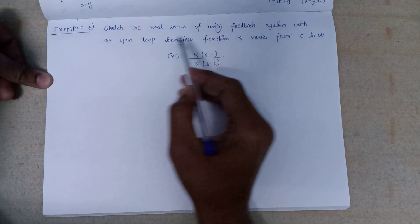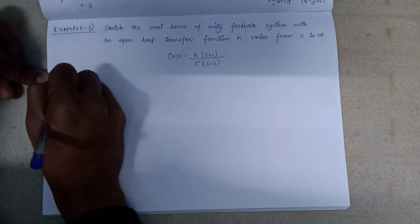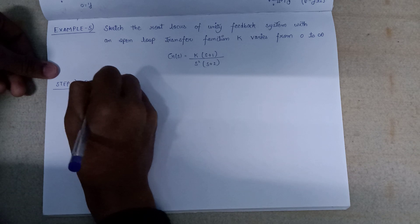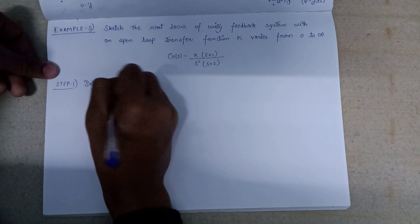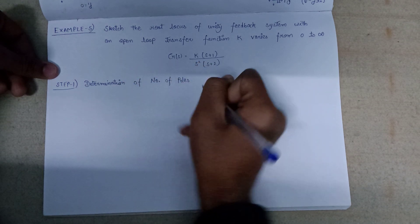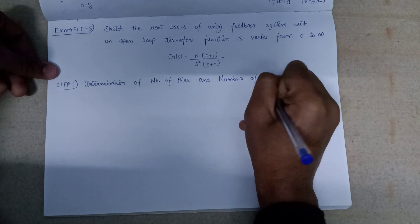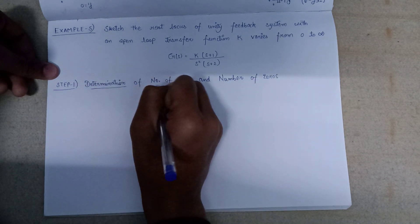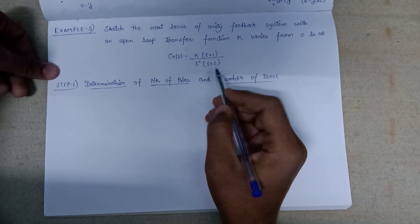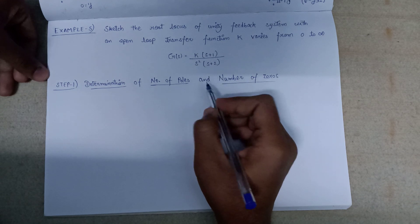We need to sketch the root locus by following all the steps discussed in previous videos. Let's move on to step number 1: determination of the number of poles and number of zeros. On equating the numerator part to zero we get the zeros, and on equating the denominator part to zero we get the poles. First we will calculate the number of zeros.